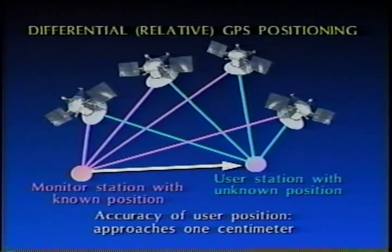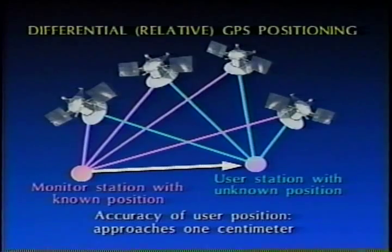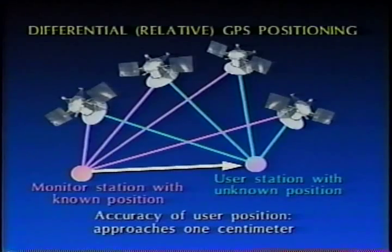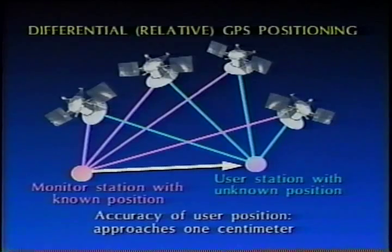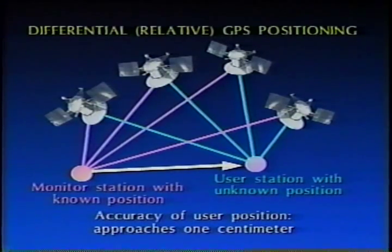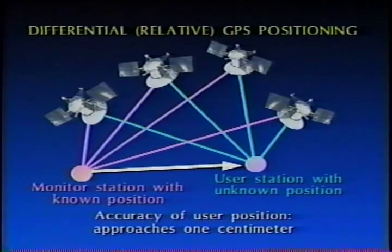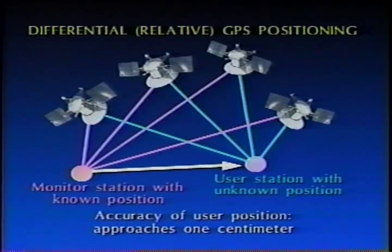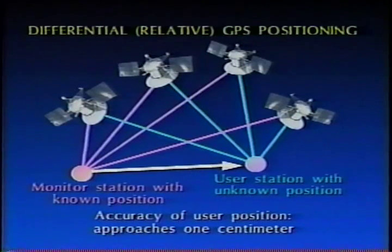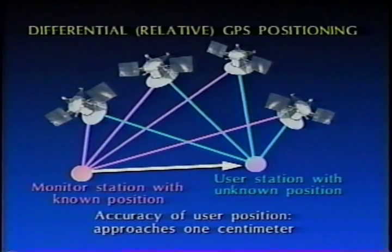An analogy could be made to a ground-based traverse: we could perform a traverse based on project coordinates — precise, but not related to the California Coordinate System. If we begin the traverse on a known CCS point and end on another known CCS point, we know the relationship of all traverse points to a common datum and can provide accurate CCS coordinates for all stations. In effect, differential positioning is the key to virtually all survey applications of the GPS technology.